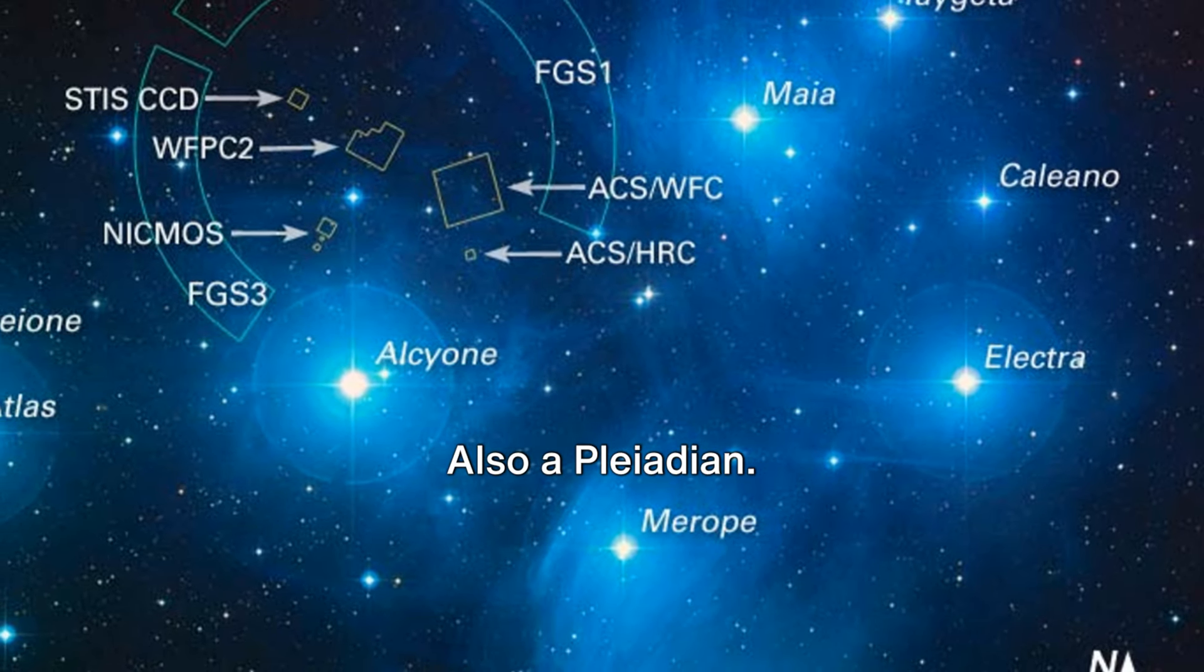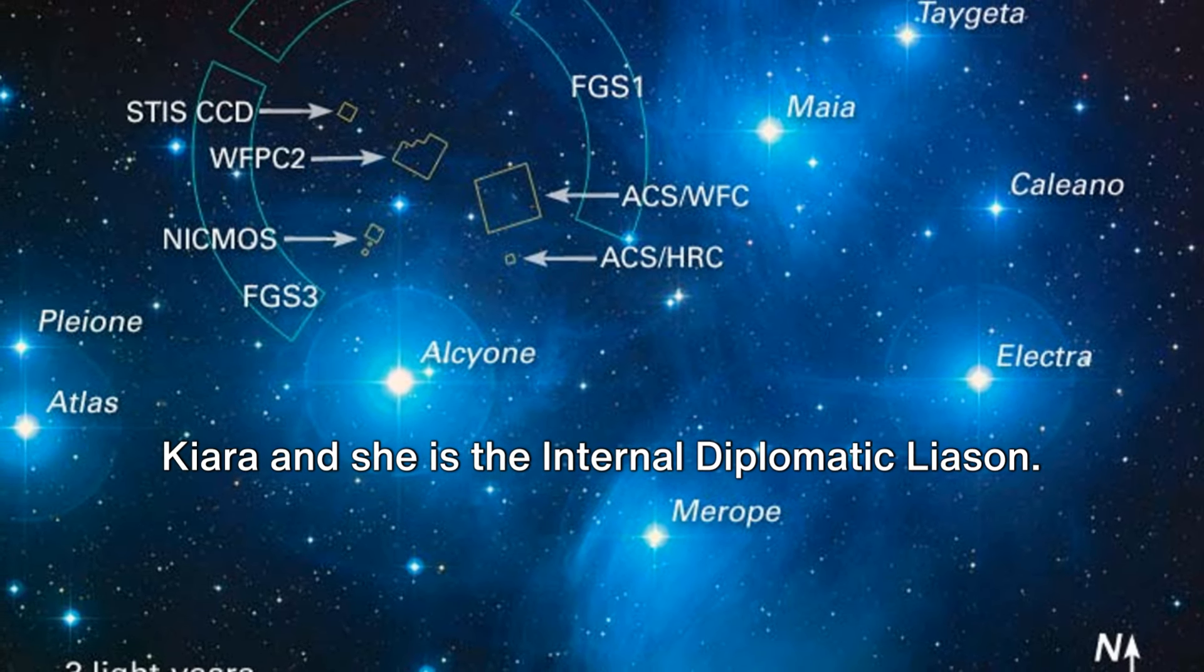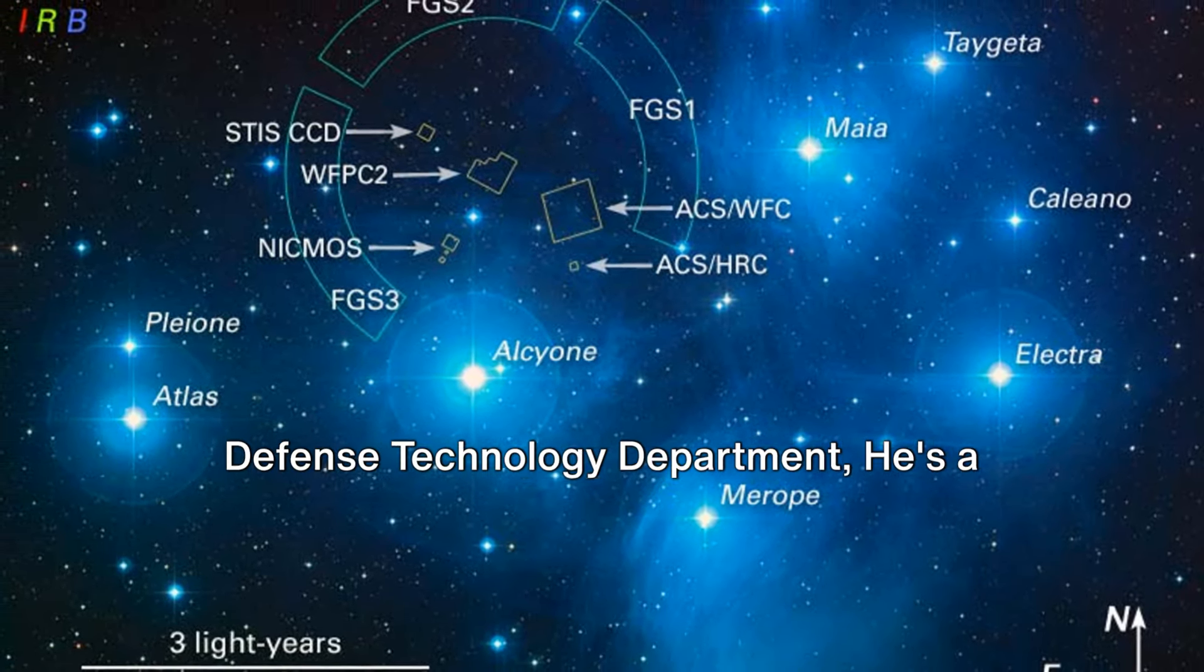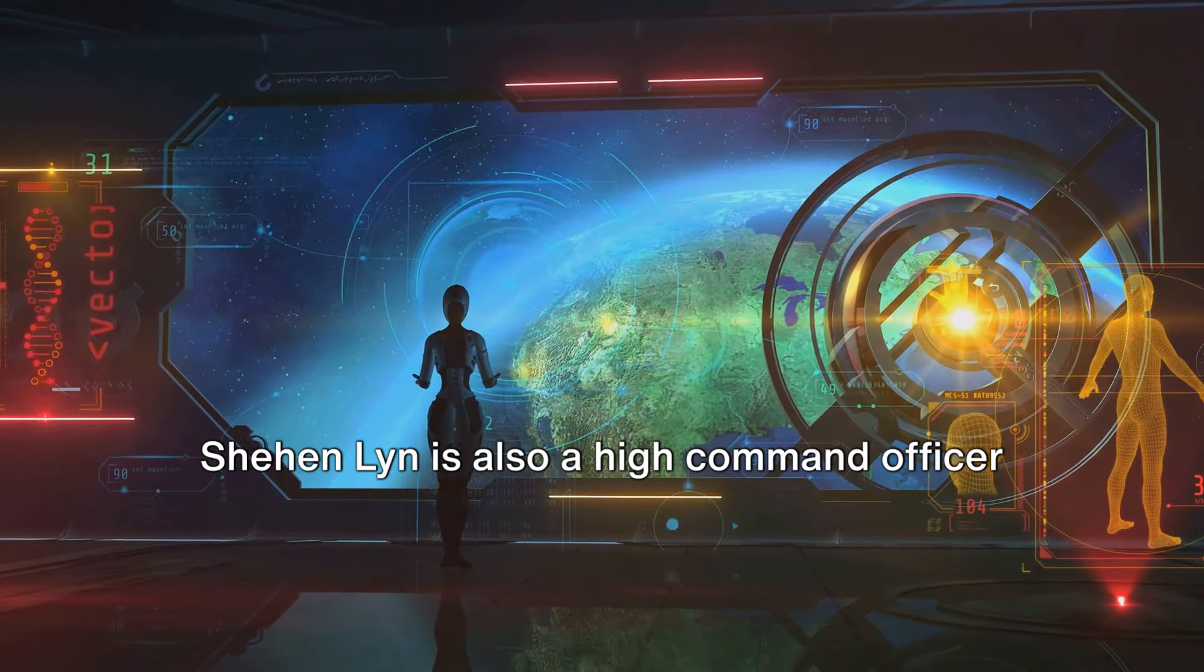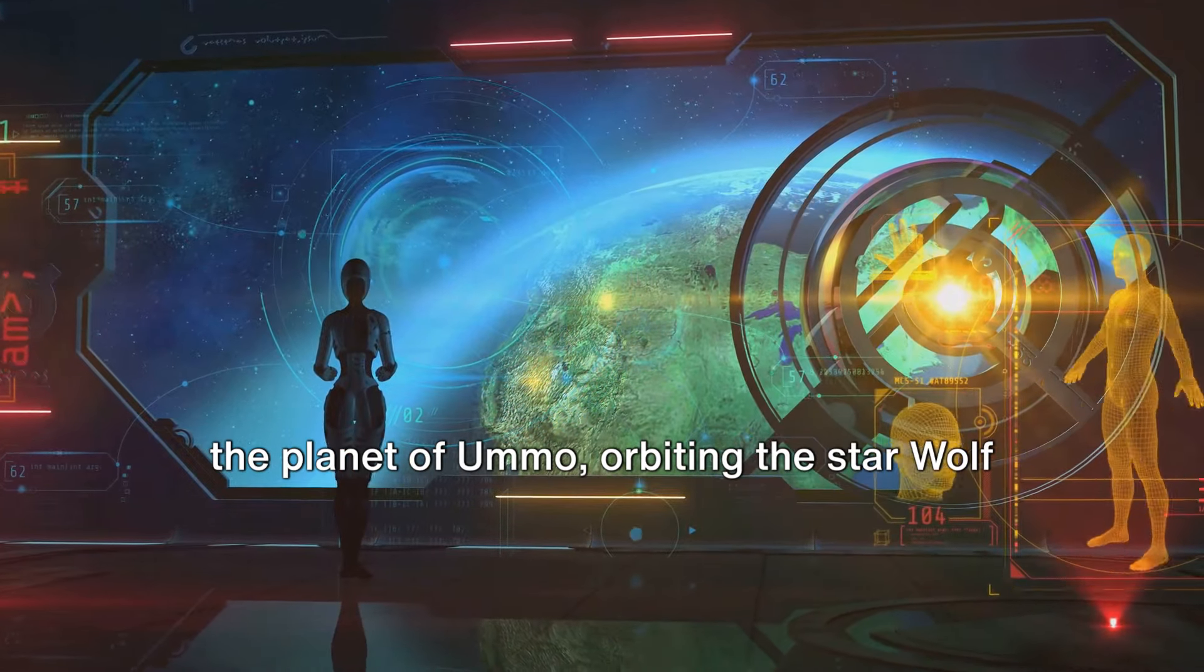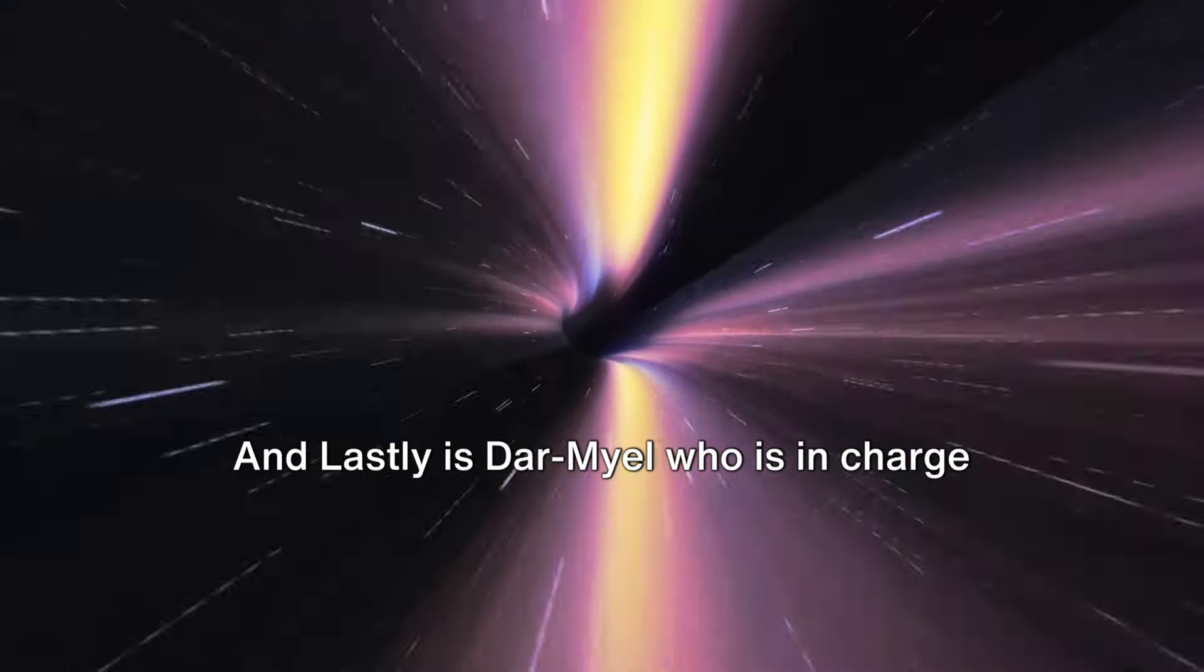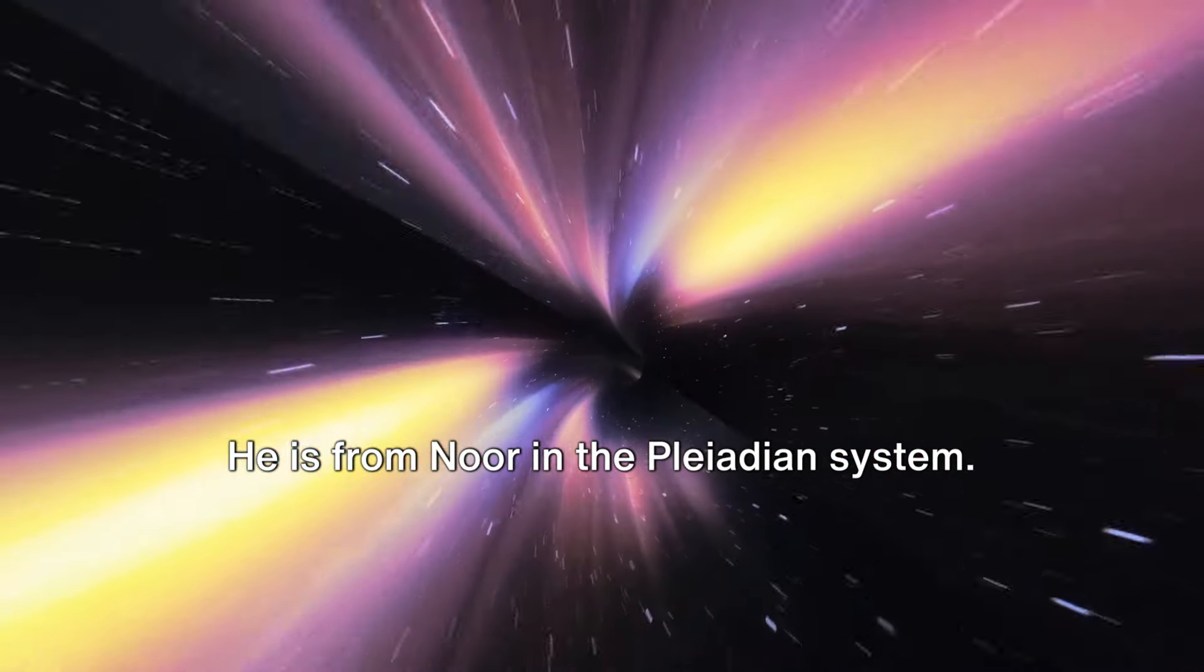Then there is Jor-El, also a Pleiadian. He is in charge of tactical operations. Next is another Pleiadian from Ahel. Kiara and she is the internal diplomatic liaison. Denethor is also from the planet era in the Pleiadian system, and he is with the Defense Technology Department. He is a scientific high officer and liaison. Shehan Lin is also a high command officer in charge of communications and is from the planet of Umo, orbiting the Star Wolf 424, which is about 14.3 light-years from Earth in the constellation Virgo. And lastly is Dar Mael, who is in charge of strategy and combat logistics. He is from NOR in the Pleiadian system.